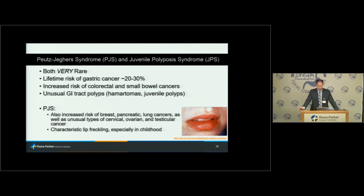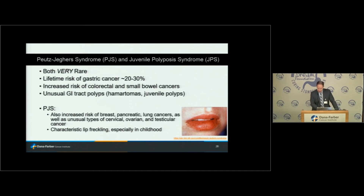Peutz-Jeghers syndrome and juvenile polyposis syndrome are two particularly rare syndromes with some overlap. The lifetime risk of stomach cancer in these syndromes is substantial — 20 to 30 percent. There are other manifestations elsewhere in the GI tract: cancers in the colon, rectum, and small intestine. Both are characterized by particularly unusual polyps — hamartomas or juvenile polyps — often triggering the diagnosis. Peutz-Jeghers specifically has a long list of other cancers including breast, pancreatic, lung, and unusual types of cervical, ovarian, and testicular cancers. One classic feature of Peutz-Jeghers is freckling of the lips and genital mucosa — it can fade in adulthood but is particularly seen in children.